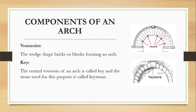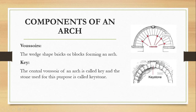Next is voussoirs. The wedge-shaped elements that form an arch are called voussoirs. Out of all these voussoirs, the top central one is termed the key, and this stone, which is slightly bigger than the other voussoirs, is termed the keystone.